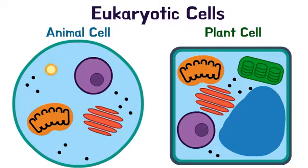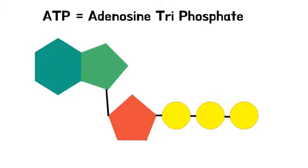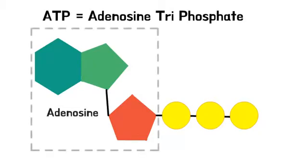First, let's take a look at ATP. ATP stands for adenosine triphosphate. Adenosine is made up of the carbohydrates ribose and adenine.